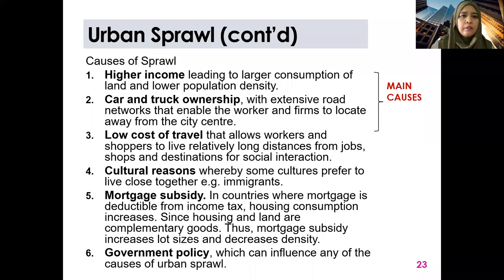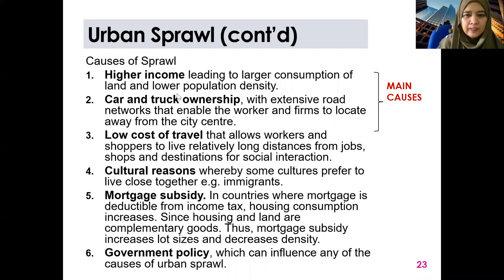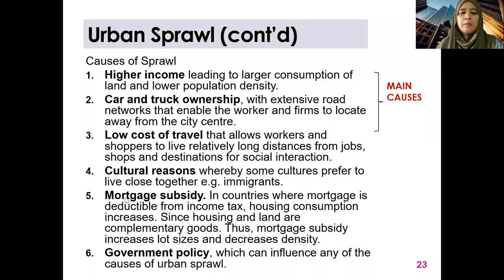So there are six causes of sprawl that I mentioned here, and I mentioned the first two, which is a continuation from the previous slide — what the planner said regarding the population enjoying higher income and better modes of transportation that enables people to live outside the city centre. Low cost of travel that allows workers and shoppers to live relatively long distances. Cultural, mortgage subsidy and government policy.